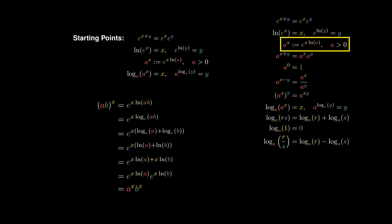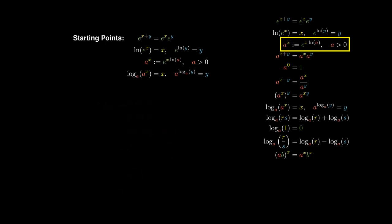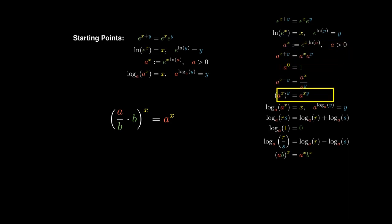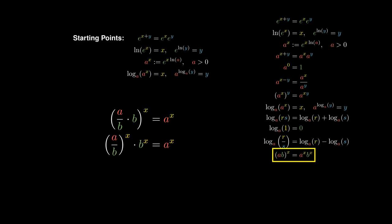Now instead, let's consider the product of a over b and b, all to the x. By algebra, this simplifies to a to the x. However, by the result we just derived, the left-hand side must simplify to a over b to the x times b to the x. Dividing out b to the x on both sides, we obtain that the power of a quotient is the quotient of two powers.